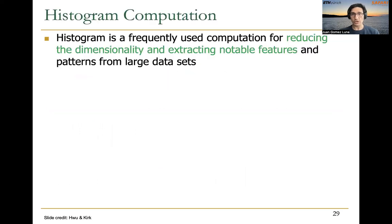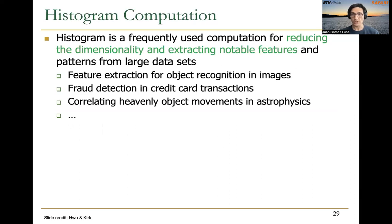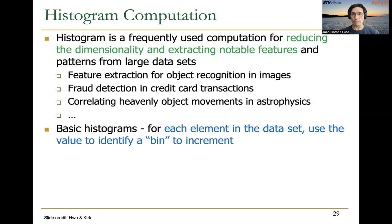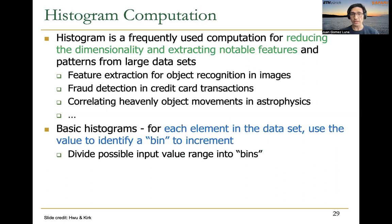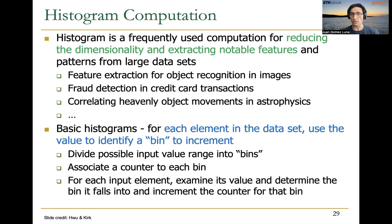We are going to use atomic operations today for histogram computation. A histogram is a data structure used for reducing the dimensionality and extracting notable features and patterns from large data sets. It's used in image processing, fraud detection, and other fields. In a basic histogram, for each possible value in the input elements, we identify a bin. This bin has a counter associated that we increment every time we find the corresponding value in the input. So basically, we divide the input value range into bins, associate a counter to each bin, and for each input element we check its value, determine which bin it falls into, and increment the corresponding counter.